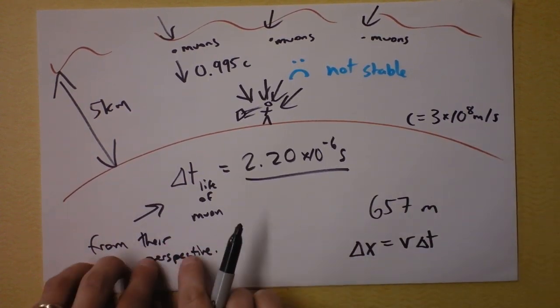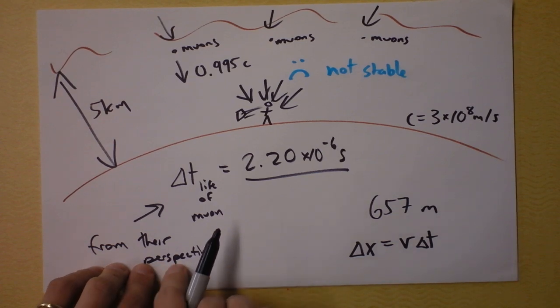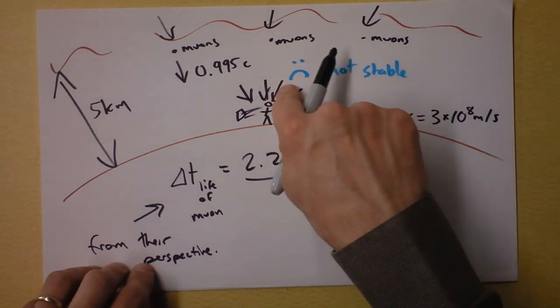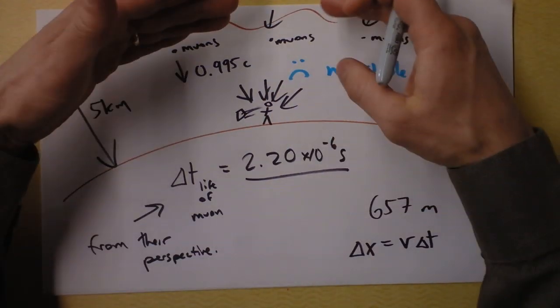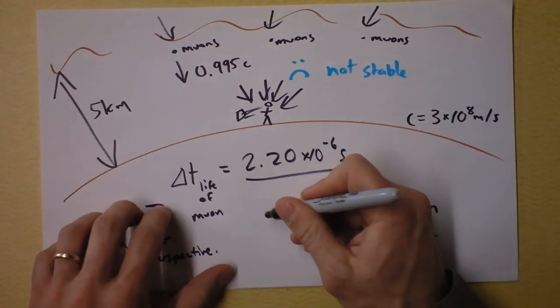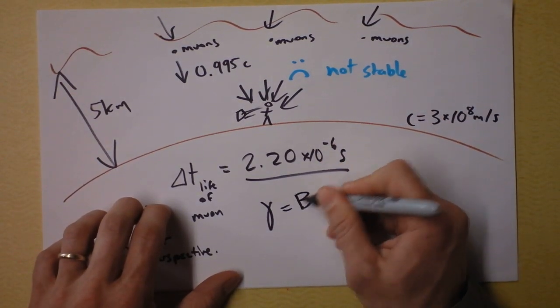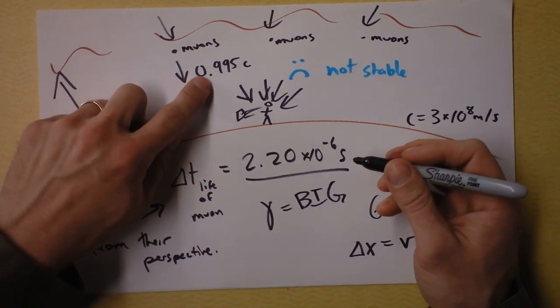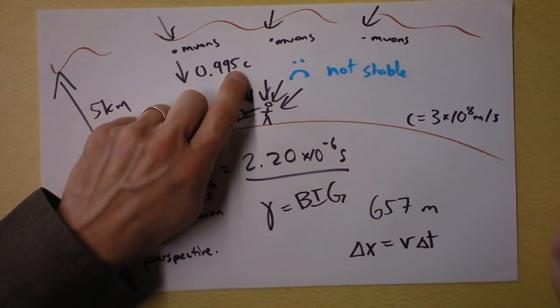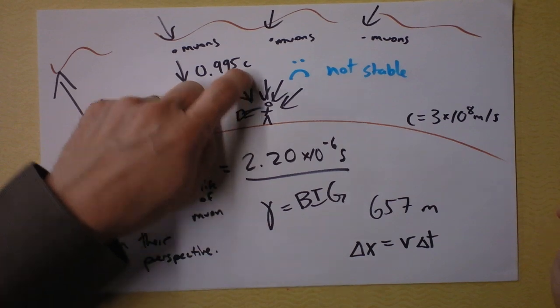Okay, so you've got muons that are living for longer than they ought to. And in fact, they're going much, much, much further than they ought to because their gamma is big. You could calculate their gamma at 0.995 times the speed of light. And you'd find that they're allowed to live for much longer.